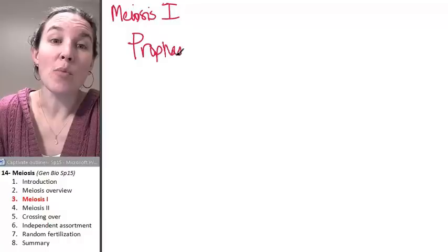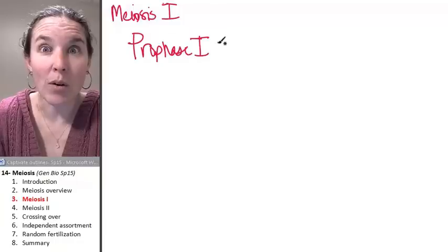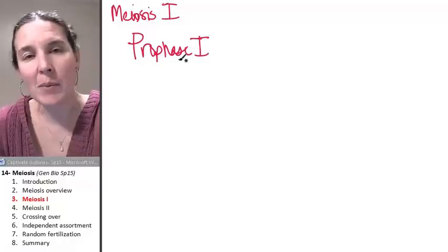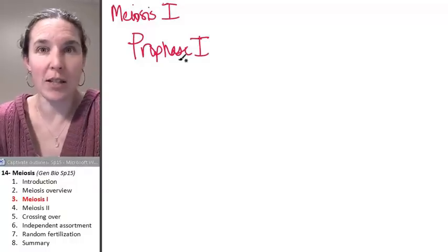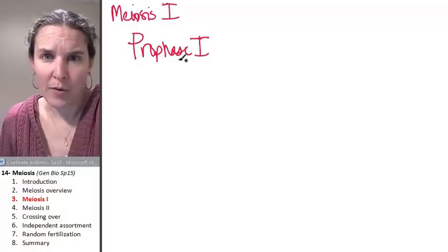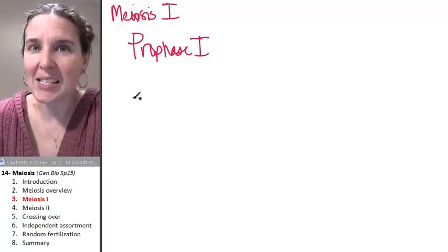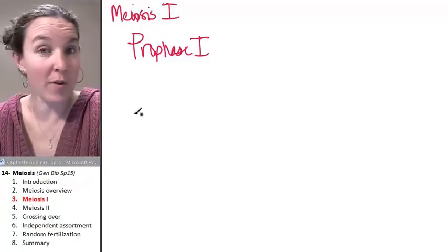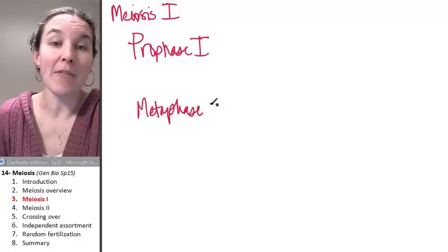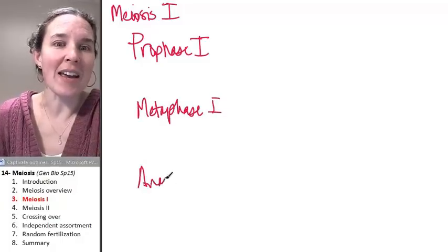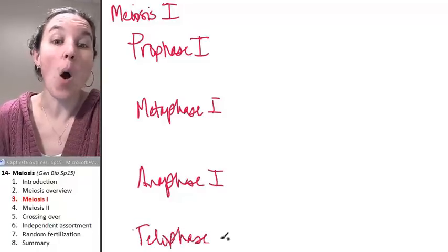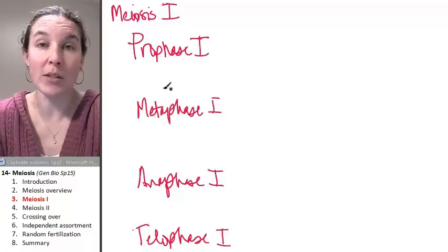So we have prophase I. Now, if you call prophase I just prophase, you're talking about mitosis, and you will get questions incorrect. It has to be prophase I. It's not prophase II. It's not prophase XII. So what do you think the next stage is? Metaphase I, anaphase I, and telophase I. Those are all part of meiosis I.